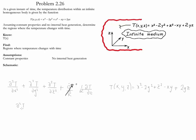Let's start with the second derivative with respect to x. That is going to be 2. The second derivative of temperature with respect to y is going to give us negative 4, and the second derivative of temperature with respect to z is going to give us 2.